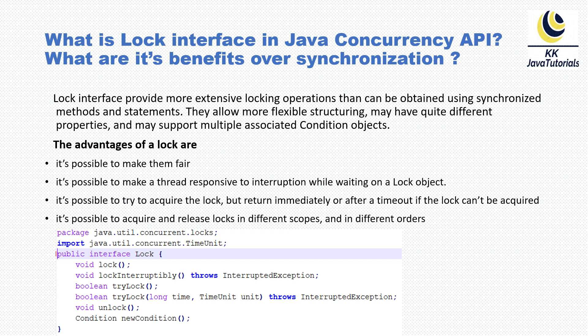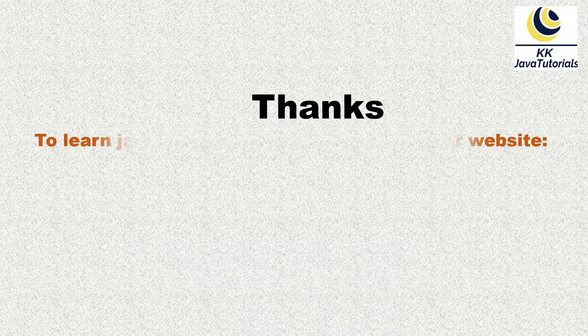The next advantage is that it is possible to acquire and release a lock in different scopes and different orders. With the traditional synchronization approach, you do not have control over the lock. But if you use the Lock interface or its implementation class, you have more control — you can acquire the lock in one block and release it in another block using the unlock() method.